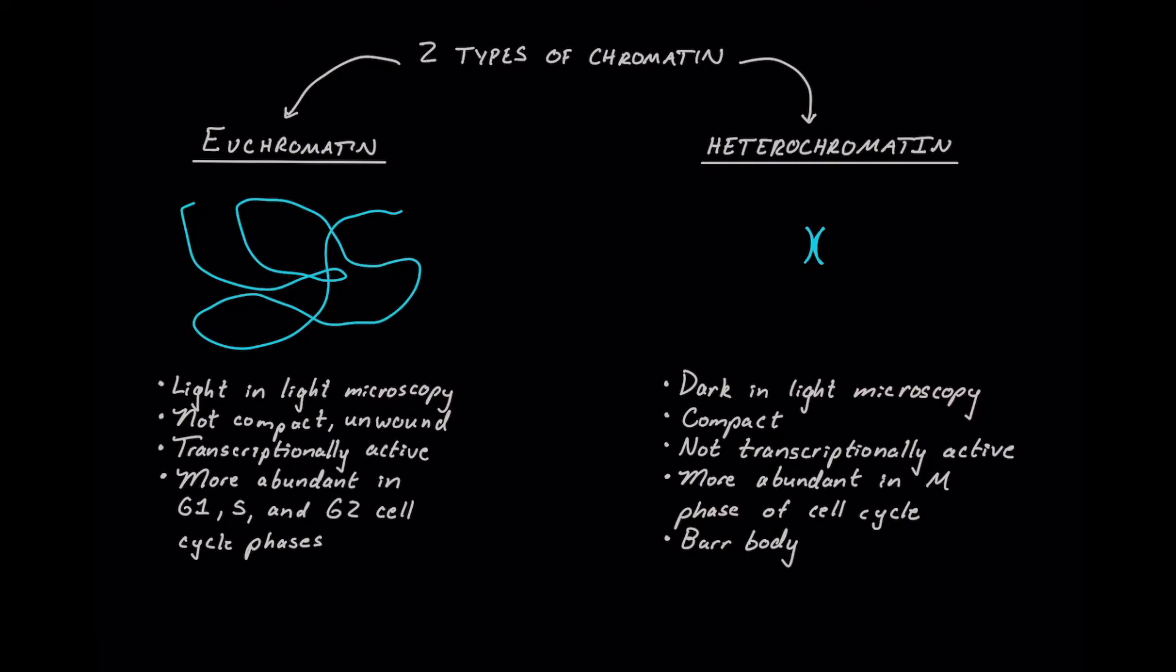Next, we'll take a look at two types of chromatin that we can have. So it's not just one static form of chromatin that we're going to be looking at throughout the cell cycle or inside of a cell. What we're going to be looking at actually are two different types of chromatin, one being euchromatin and then heterochromatin. Hetero, of course, meaning different.